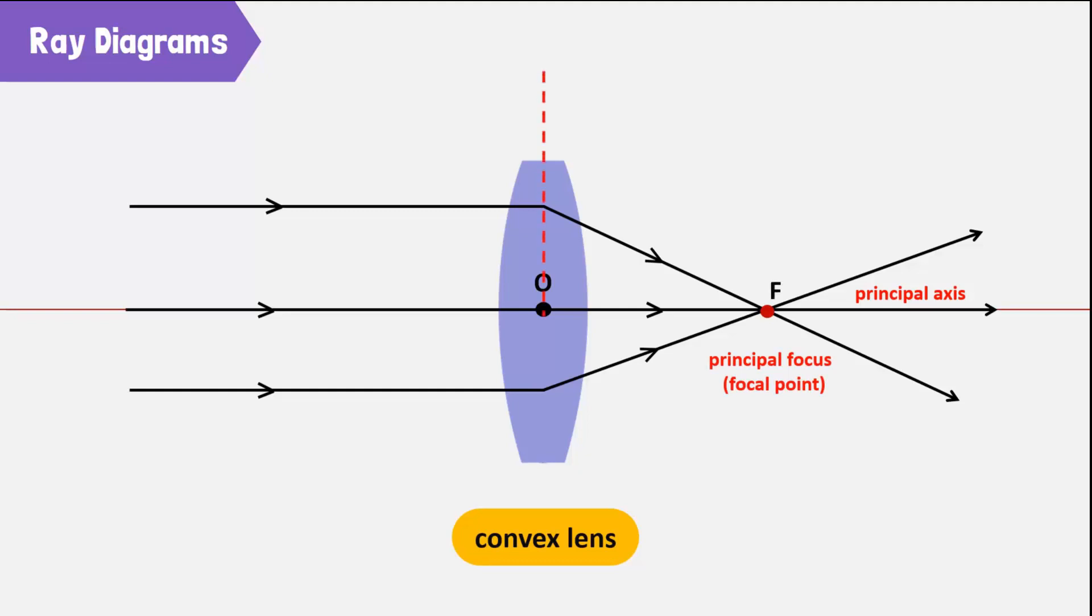The distance between the center of the lens and the focal point is called the focal length. This is denoted by a small f. If the lens is symmetrical, both the focal point and focal length will be at the same point on either side.